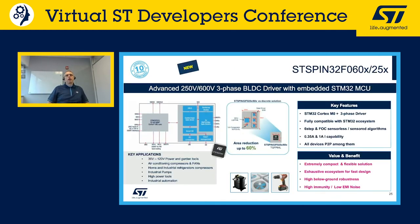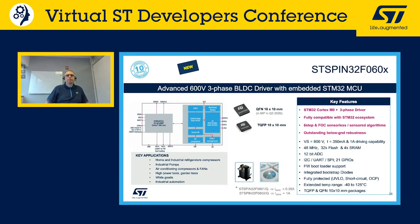Both high voltage versions can save up to 60% of PCB space due to the system-in-package solution integrating the STM32 Cortex-M0 with high voltage gate drivers. Key parameters for the STSPIN32F0 600 family: the 601 version provides up to 350mA gate current and the 602 version up to 1A for higher power applications. Both include an integrated bootstrap diode and are offered in two package versions.